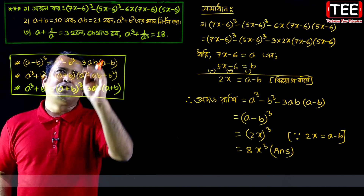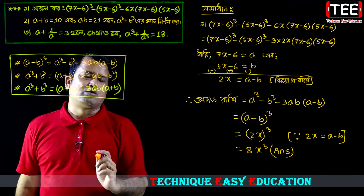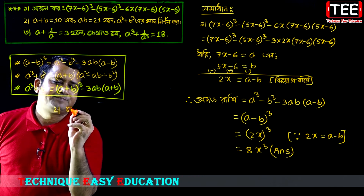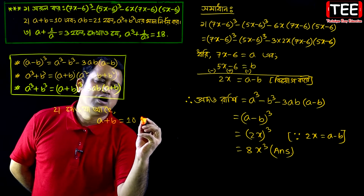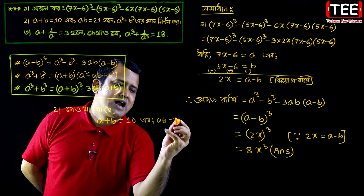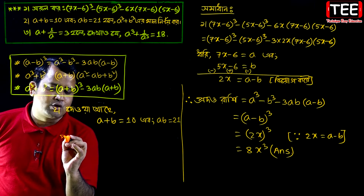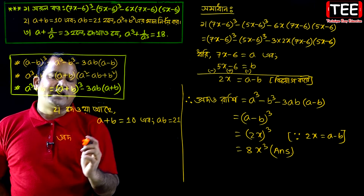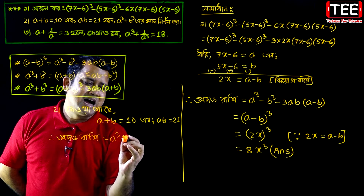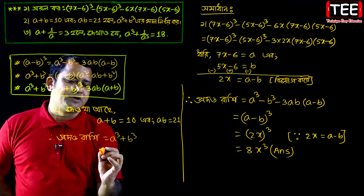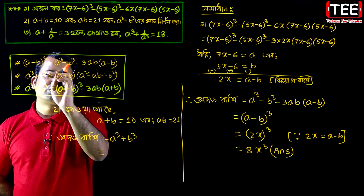Now a new problem: if a plus b equals 10 and ab equals 21, find a cube plus b cube. We use the formula a cube plus b cube, which we can derive from a plus b whole cube minus 3ab into a plus b.